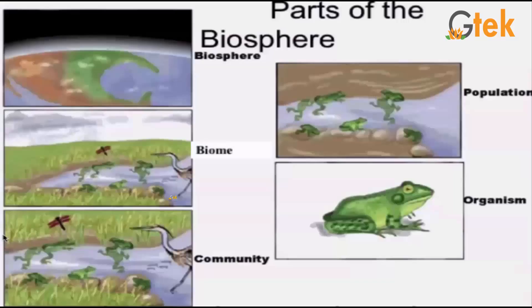Let us see the parts of the biosphere. That is the organism, and the group of organisms is called a population.